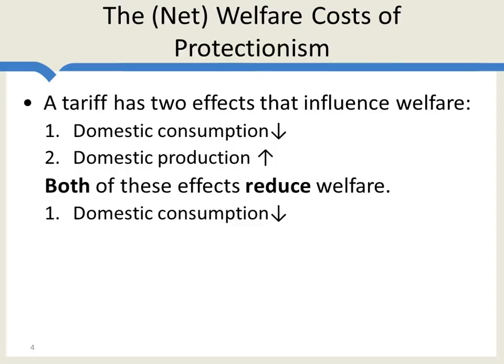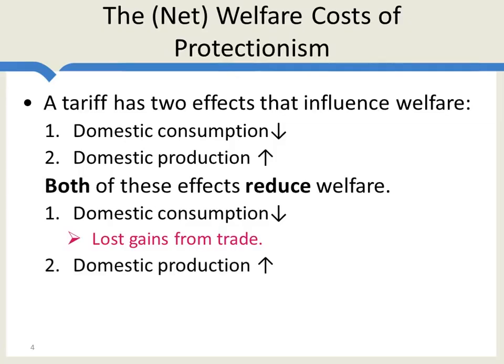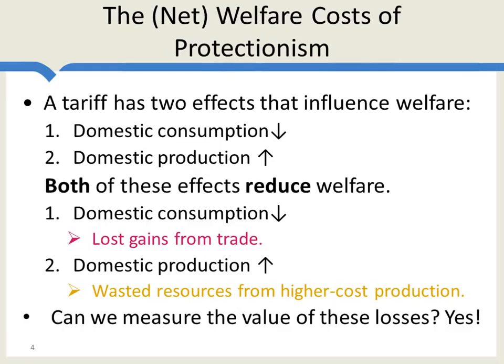Why is this? Domestic consumption falls — the reason that reduces welfare is because there are lost gains from trade. Second, domestic production increases. You might think that's a good thing, but domestic producers have higher costs than world producers, so on a net level there are wasted resources — more resources going to production than are necessary. Can we measure the value of these losses? In fact, we can, and I'll show that in the next slide.